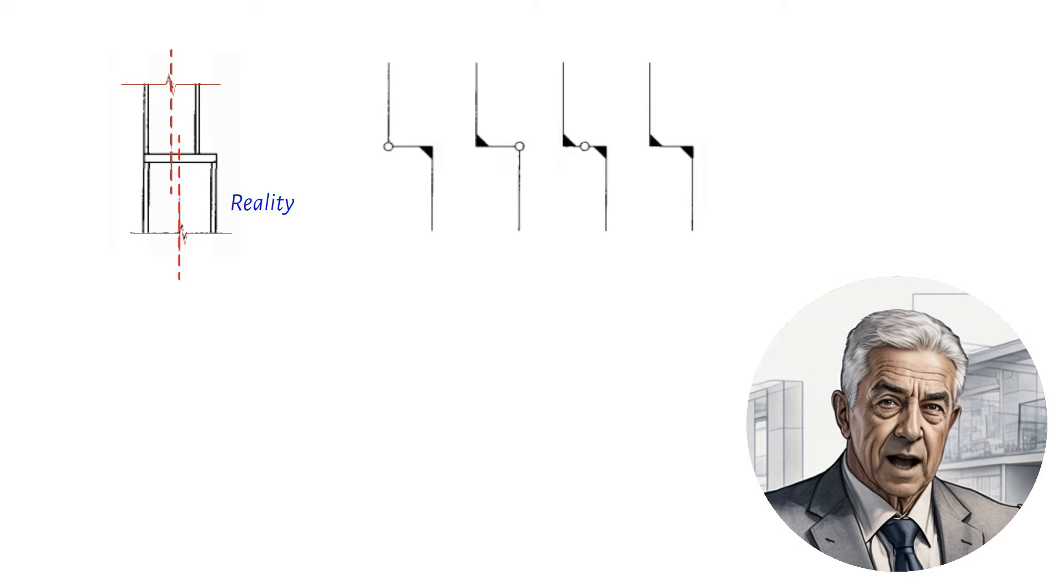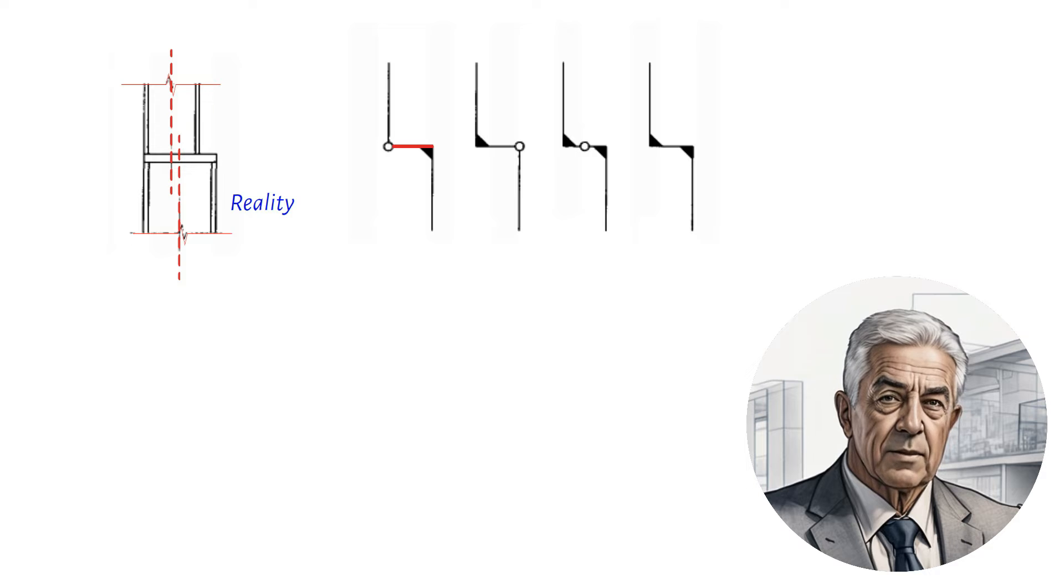One example is the introduction of a short, stiff horizontal member in the column connection, which may be rigidly connected, pinned at either end or centrally hinged.